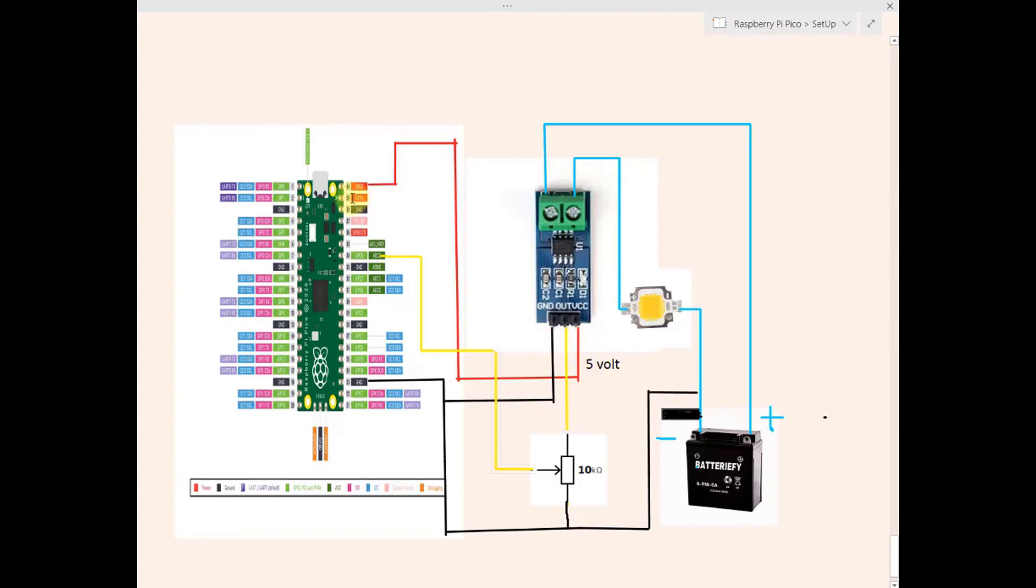The VCC of the sensor is connected to the 5V VBUS of the Raspberry Pi Pico and whenever there is 1 ampere of current flowing through the sensor in this external circuit, the Vout will create a potential difference of 66 millivolts as per the specification of this 30 ampere sensor.